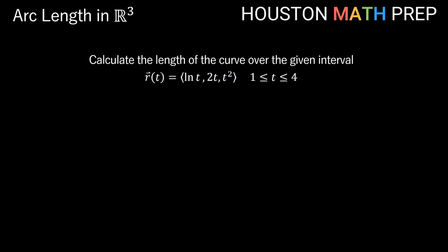Let's look at one more. We'll calculate the length of the curve over the interval 1 to 4 here. And our vector valued function is ln of t comma 2t comma t squared. So we'll first need our derivative r prime of t. If we take the derivative here, for ln of t, we'll get 1 over t. The derivative here, derivative of 2t will be 2. And derivative of t squared, that will actually be 2t. So that's our r prime.